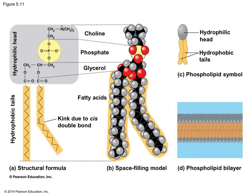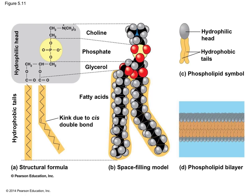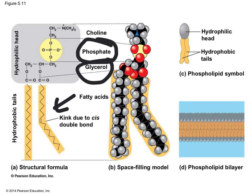A closer figure of the phospholipid shows the two fatty acid tails at the bottom, and in the head portion we have glycerol along with a phosphate group—which is why it's called a phospholipid. The heads contain both the glycerol and the phosphate group, while the tails are composed of the two fatty acids.